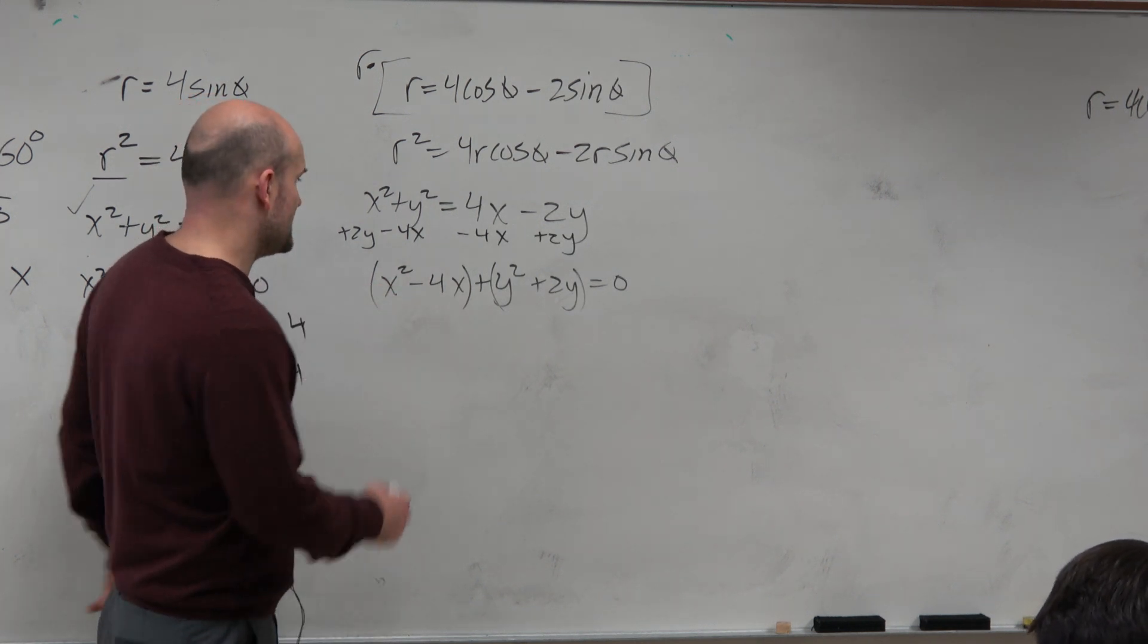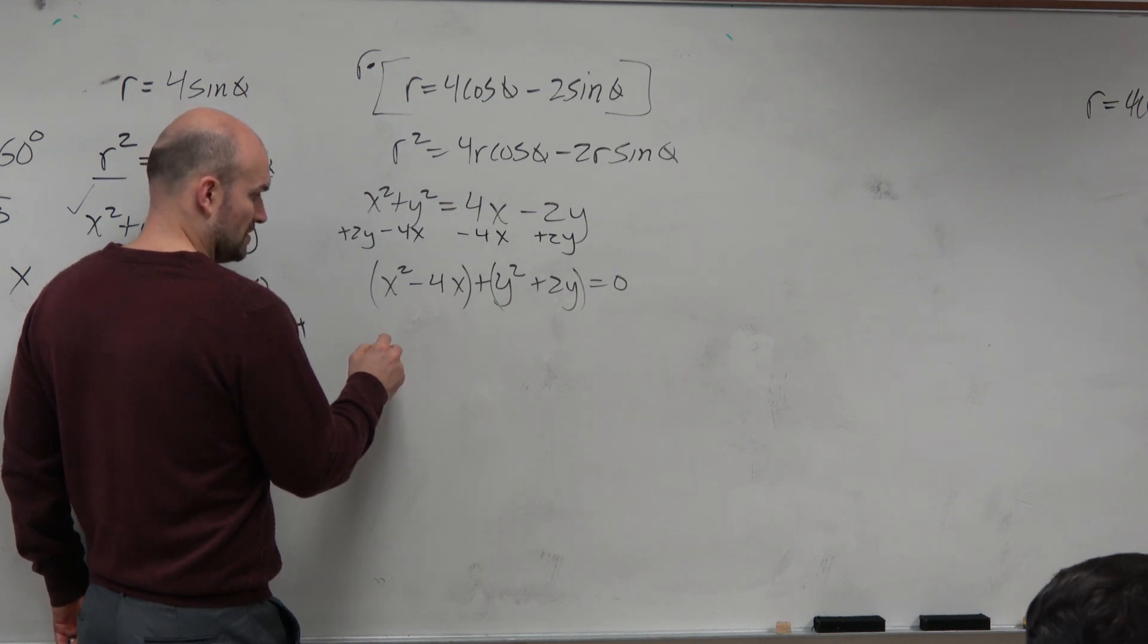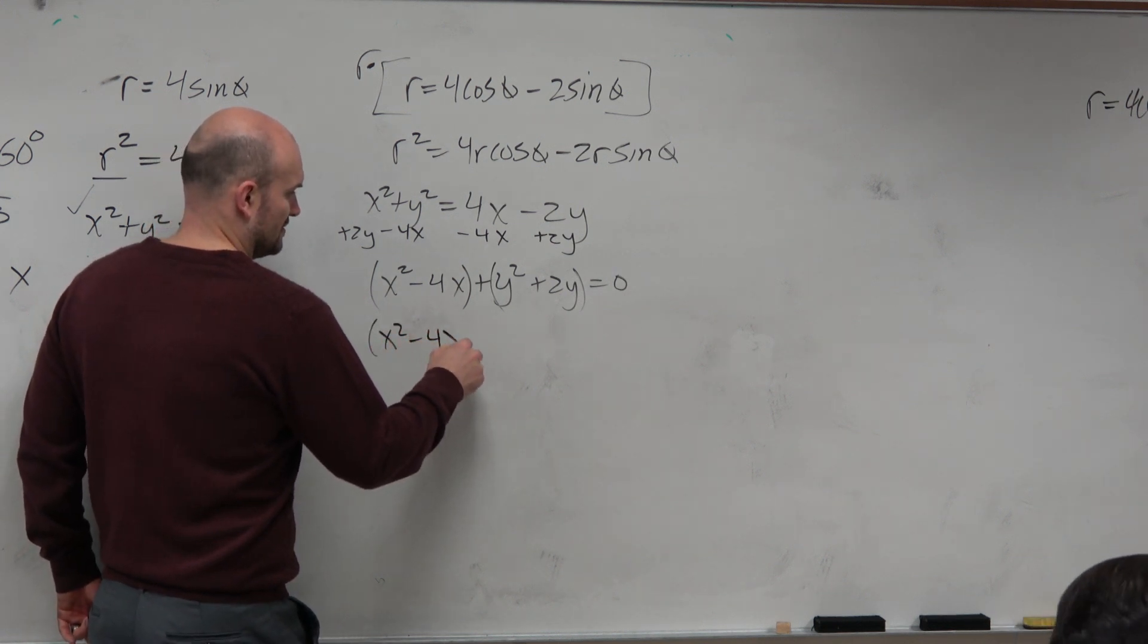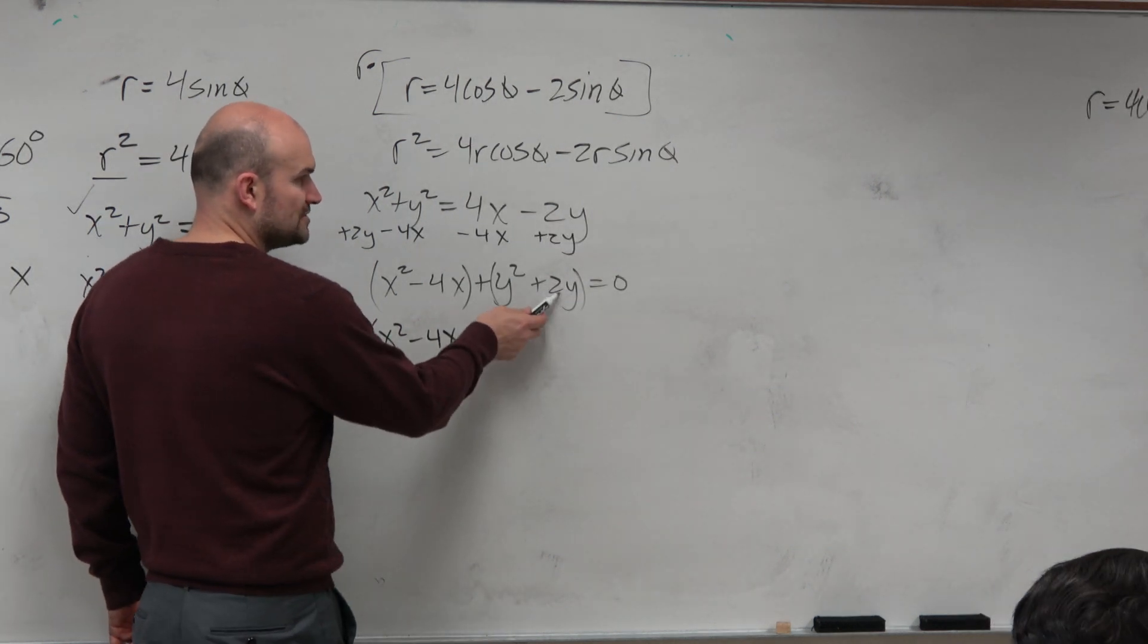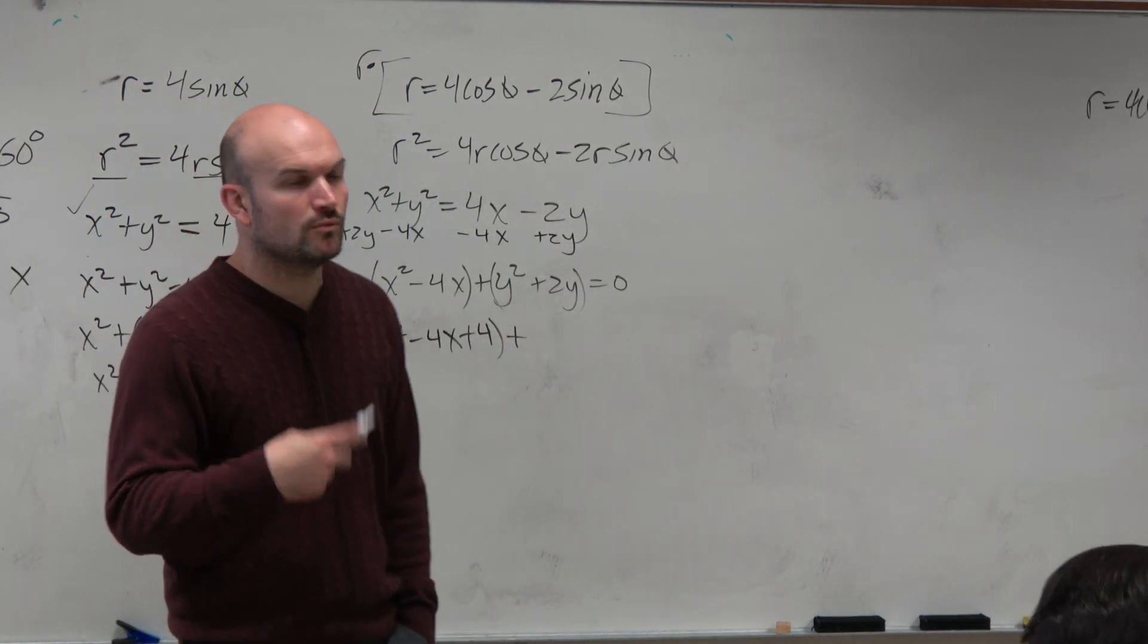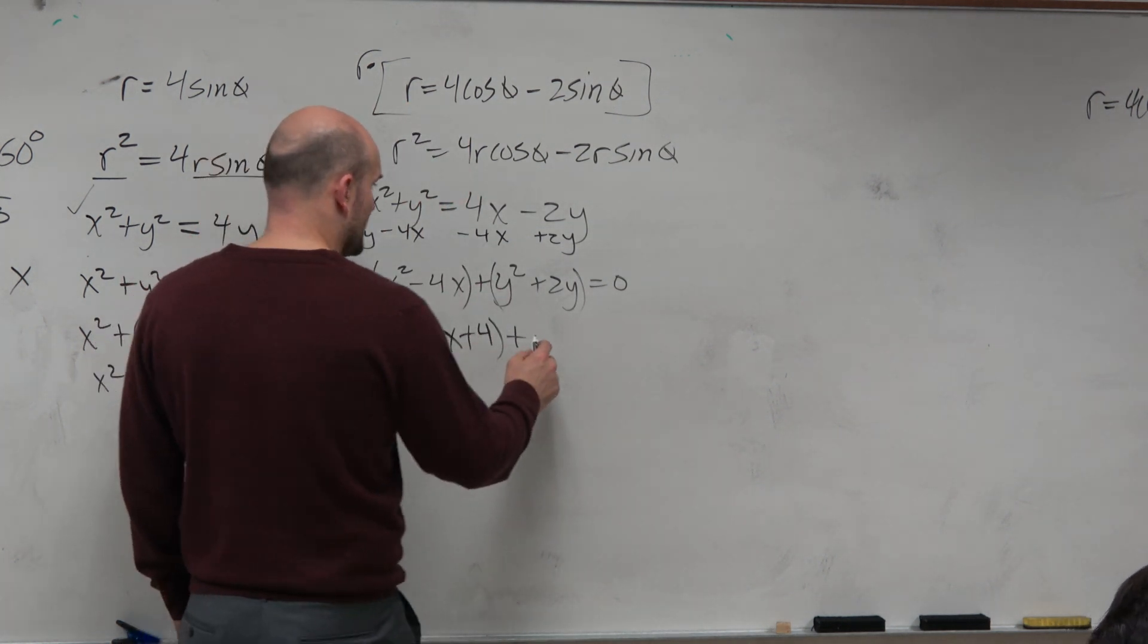Plus 4. Then let's do this one. What two numbers that are exactly the same add to give me 2, what would those multiply by? 1 plus 1 is 2. So 1 times 1 is 1.